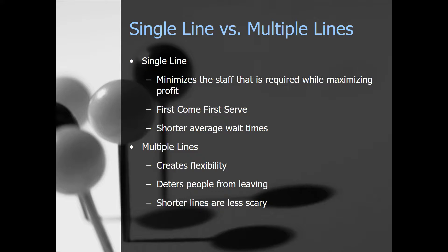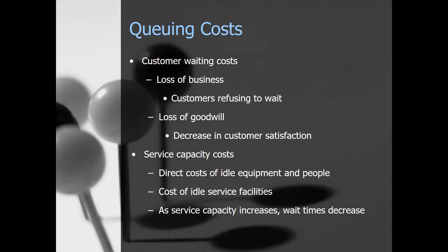With a single line versus multiple lines: a single line minimizes the staff required while maximizing profit. It's also a first-come-first-serve system, which feels fairer to customers, and on average has shorter wait times. Whereas with multiple lines, it creates flexibility. It discourages people from leaving because the lines appear shorter. When somebody sees a really long line, they're much more likely to walk away than if they see a bunch of short ones.